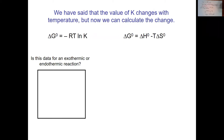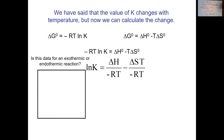K changes with temperature. How do we figure out how much? We have two equations for delta G standard: delta G standard equals delta H minus T delta S, and delta G standard equals negative RT ln K. Setting them equal and solving for ln K by dividing both sides by negative RT, then simplifying and canceling T over T, we get: ln K equals negative delta H over R times one over T, plus delta S over R.